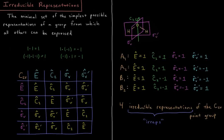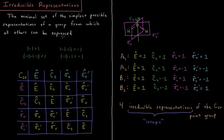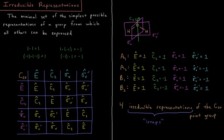Continuing our discussion of symmetry and group theory, we're going to look at irreducible representations, which we define as the minimal set of the simplest possible representations of a group from which all others can be expressed. In the previous video on symmetry operator matrices, we showed how the symmetry operations of a group can be represented as matrices having the same effect as the operation itself — one representation of those operators in a given point group. Here we extend that concept to irreducible representations, which are the simplest possible representations.